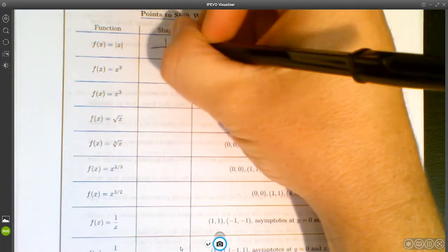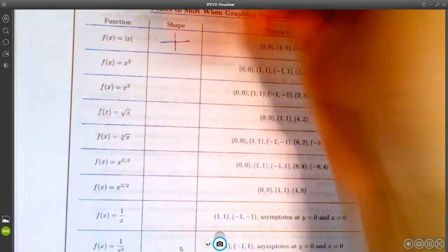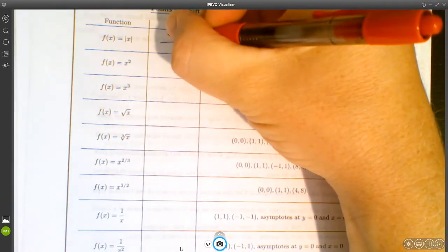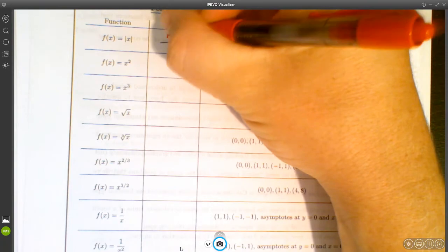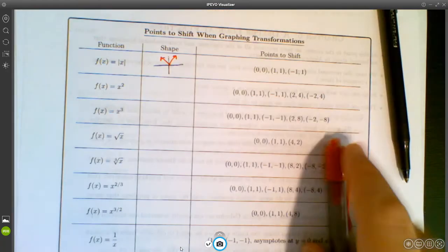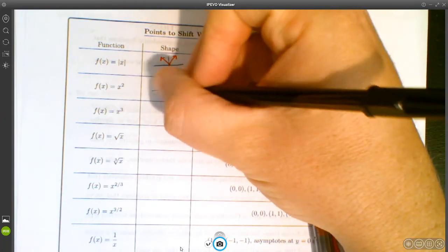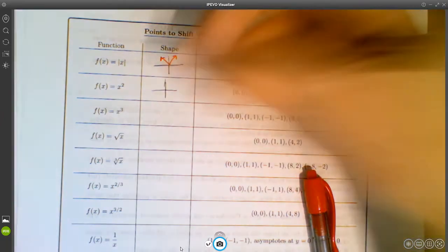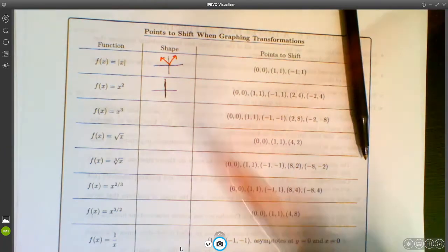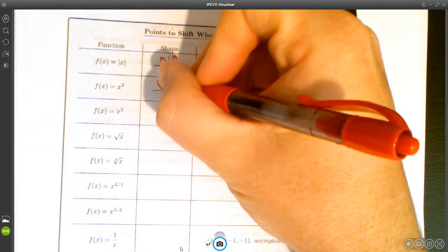So, the shape of just your standard absolute value function is a V shape like this. So, you should have all of these things memorized. I've asked you to memorize them prior to this. The shape of a quadratic function looks something like this. It's a parabola.